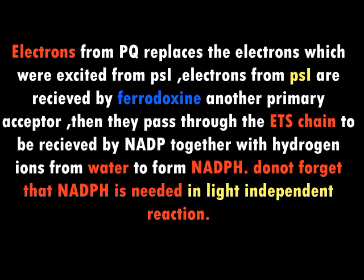So at this point we have NADPH and ATP. Both of them are taken to the dark reactions — the Calvin cycle in C3 plants and the Hatch and Slack cycle in C4 plants. ATP acts as the energy source and NADPH acts as the hydrogen source for reduction, both accelerating reactions as glucose is being manufactured.